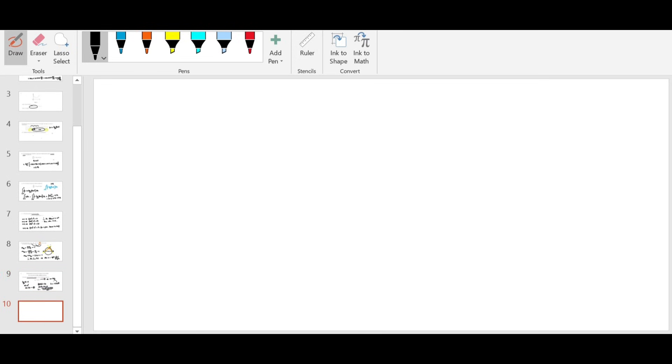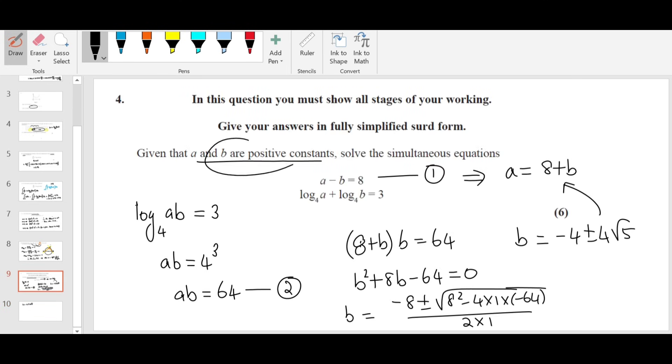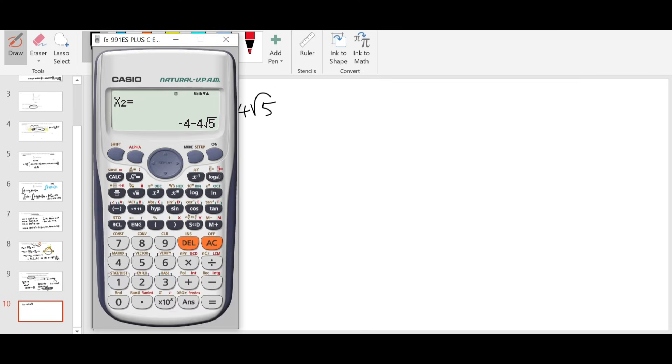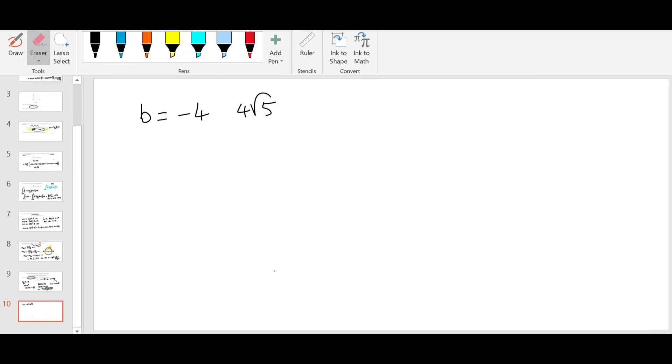We got the value of B as minus 4 plus or minus 4 root 5. But look at the equation. They say A, B are positive. So which one of these values is positive? This is definitely negative. The first value is positive. So we will take only minus 4 plus 4 root 5. And then A is from equation 1, 8 plus B. So sub in here, 8 plus B. You will get 4 plus 4 root 5. A is 4 plus 4 root 5, B is minus 4 plus 4 root 5.